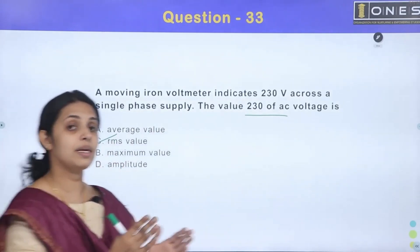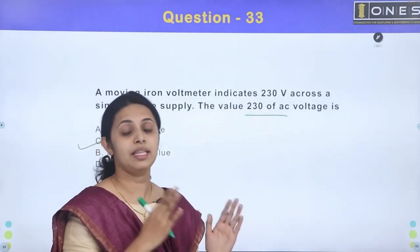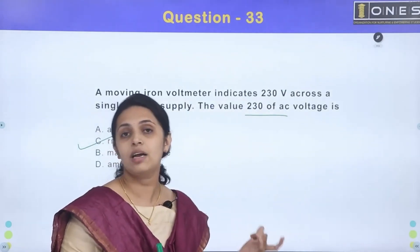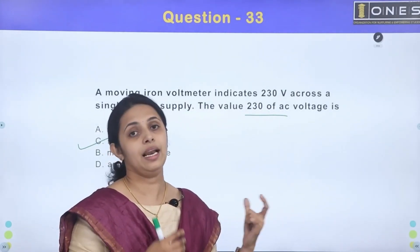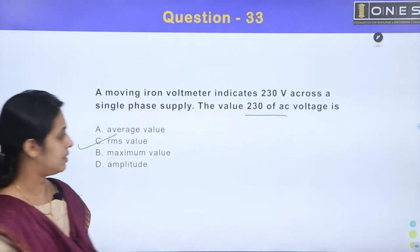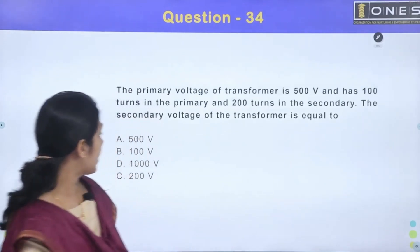That is the value of MI instrument. MI instrument, we are able to use AC to DC. We are able to use AC value and DC value. We are able to use the waveform. That function is RMS value. We are able to use moving iron instruments.